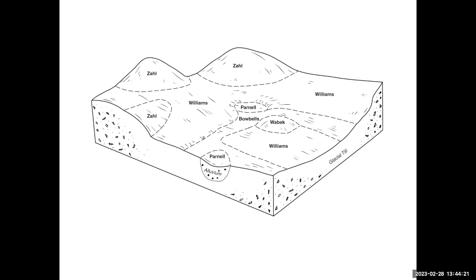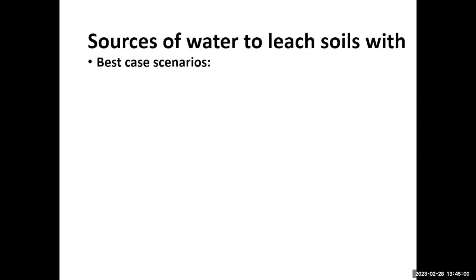If you had a brine spill on a sloped soil, in a one-inch rainfall event you'd get very little infiltration — especially with short, intense storms that are common here. Landscape position makes a big difference on how much water you can expect to move through those soils, which in turn affects how well you can use natural conditions to move brine down into the profile where it can be collected with tile drainage.